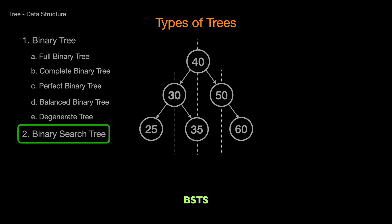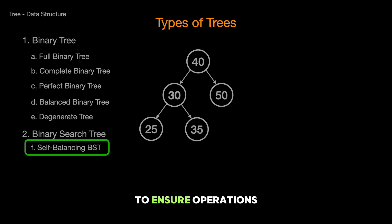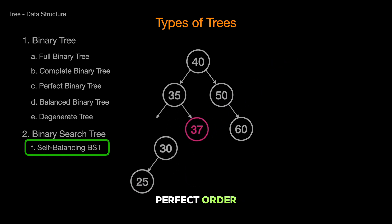But even within BSTs, there's a desire for balance. That's where self-balanced BSTs come into play. These trees automatically keep themselves balanced during insertions and deletions to ensure operations stay efficient. It's like an automatic organizing system that keeps your files in perfect order no matter how many you add or remove.